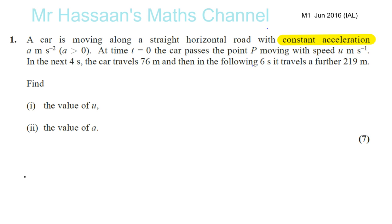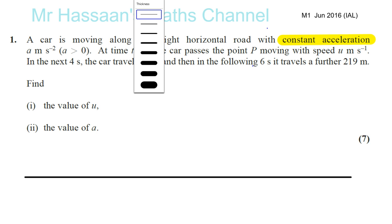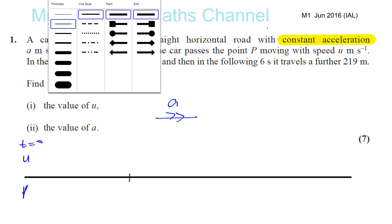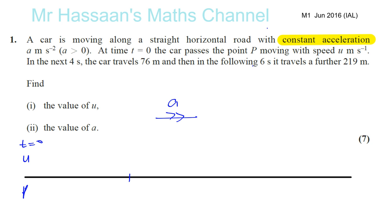So you have a straight horizontal road. At time equals zero, we have this car at point P moving with speed U, and the acceleration is constant throughout this whole journey, A. In the next four seconds it travels 76 meters. So let's say it's reached here after four seconds. So in the next four seconds, it's traveled 76 meters, this is when time equals four.